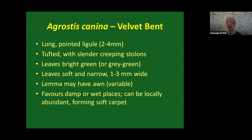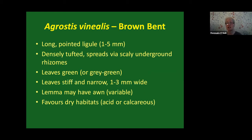Now Agrostis canina — velvet bent. It has a long pointed ligule, a few millimetres long. It's tufted with slender creeping stolons, and the leaves are bright green or sometimes grey-green, short and narrow — maybe one to three millimetres wide, really quite delicate looking. The lemma may have an awn but this is very variable. Agrostis canina favours damp or wet places, and can be locally abundant, forming a soft green carpet.